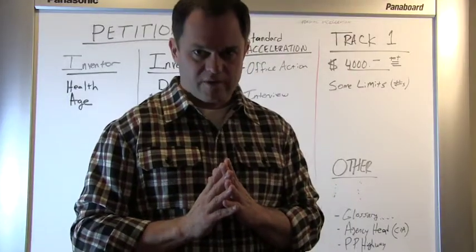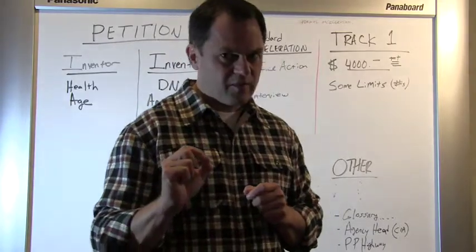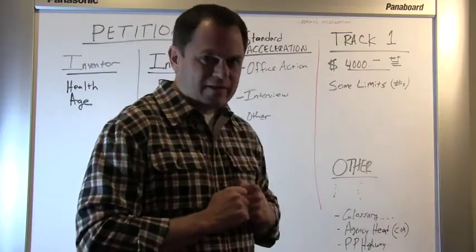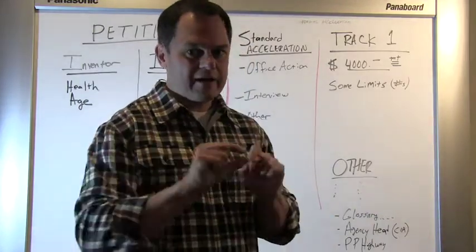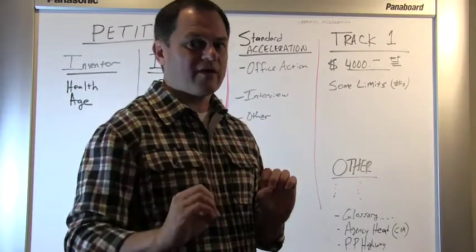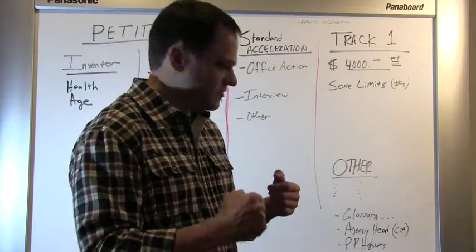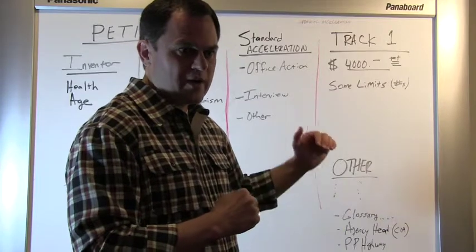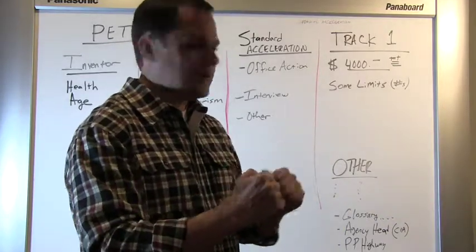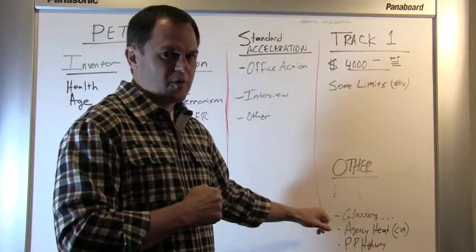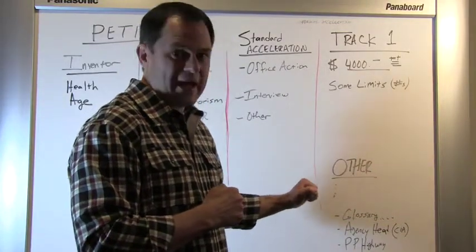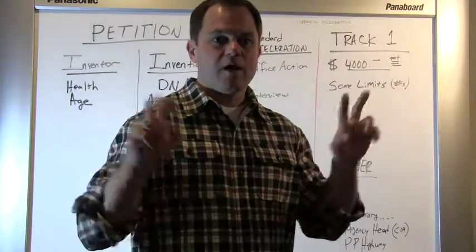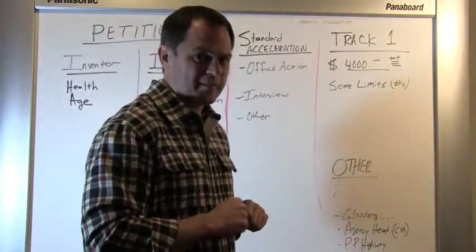In addition, there's something called the glossary program. Now, this is not available every year. But when it is, it is powerful. Basically, the glossary program means that you provide strict definitions for elements of your invention. So your patent application then includes a definition section. Then by filing under the glossary program, your application is placed to the front of the line. What I love about the glossary program is that when I have seen it used, I have seen patent applications examined and allowed in three months.